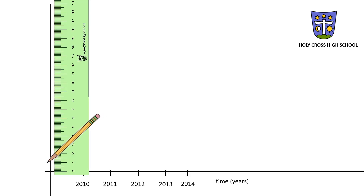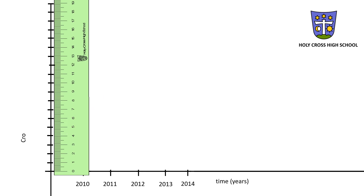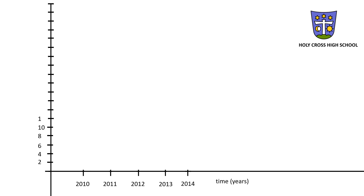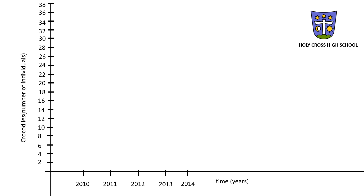On to the y-axis. Using the pencil, let's make a marker next to each cm and continue to the top of the page on the y-axis. As before, let us add values to the markers. In this case, I will work in multiples of 2, and I will mark 2, 4, 6, 8, and so forth, all the way to the top — I will end at 38. Also note, I add here the axis title, in this case the crocodiles, and the unit, in this case, number of individuals.